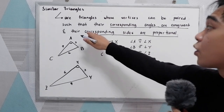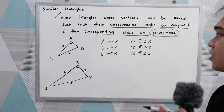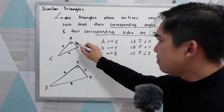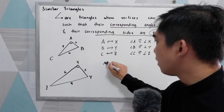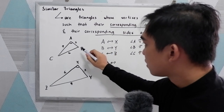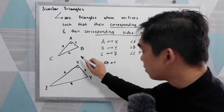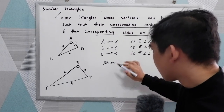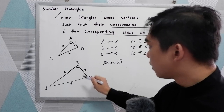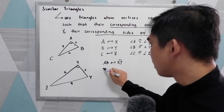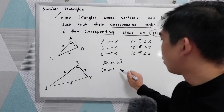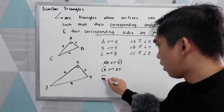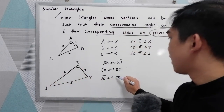Corresponding sides are proportional. Let's check if our sides are proportional. AB corresponds to XY, CB corresponds to YZ, and AC corresponds to XZ.